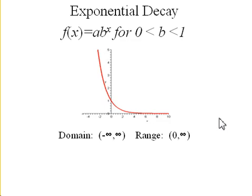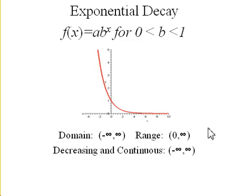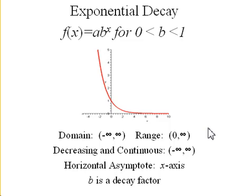Again, it's still got a domain of all reals, and the range is still from 0 to infinity, not including 0. It's decreasing and continuous everywhere. It still has a horizontal asymptote at the x-axis. Now because it's decaying or the graph is decreasing, we call b a decay factor.